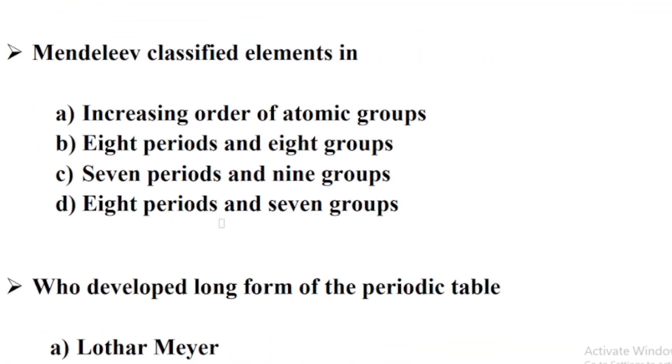Mendeleev classified elements in — Option C: Seven Periods and Nine groups.